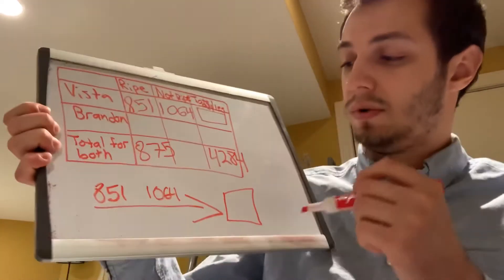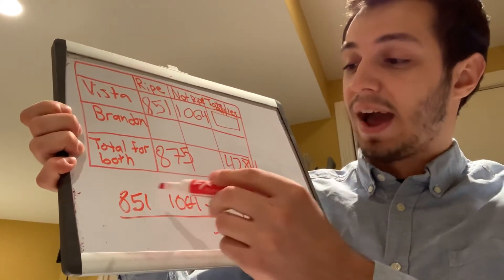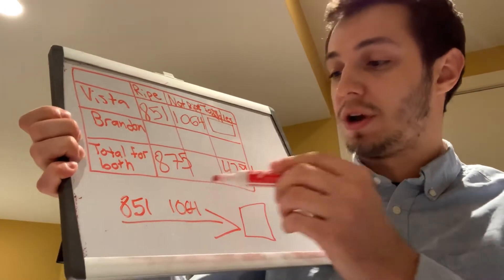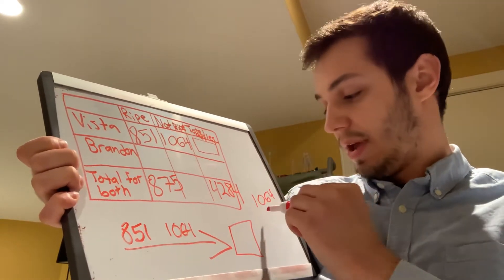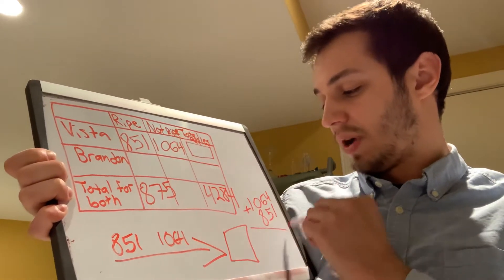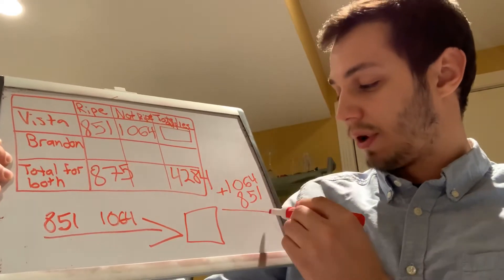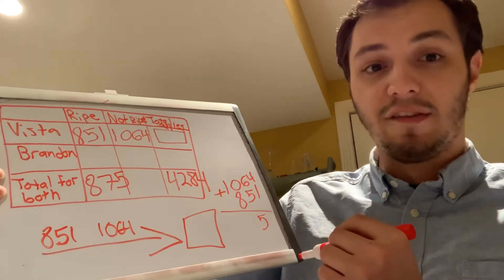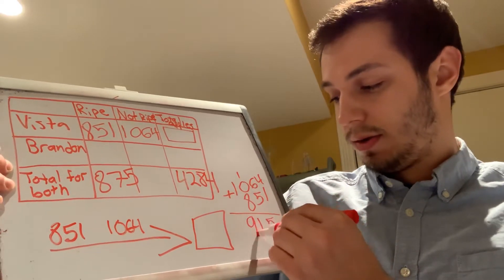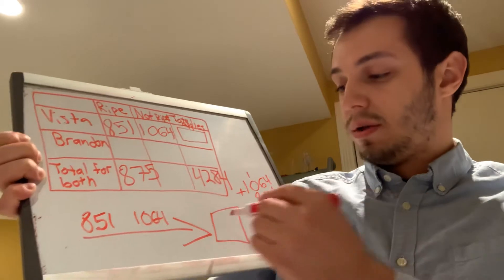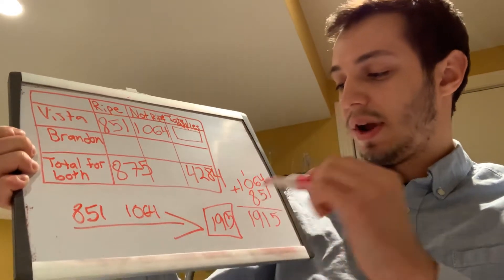To find the big number, I add the two smaller numbers: 1,064 plus 851. Lining up all digits — 1 plus 4 is 5; 6 plus 5 is 11, so put the 1 down and carry the 1; 1 plus 8 is 9; and 1 plus nothing is 1. So our big number is 1,915.